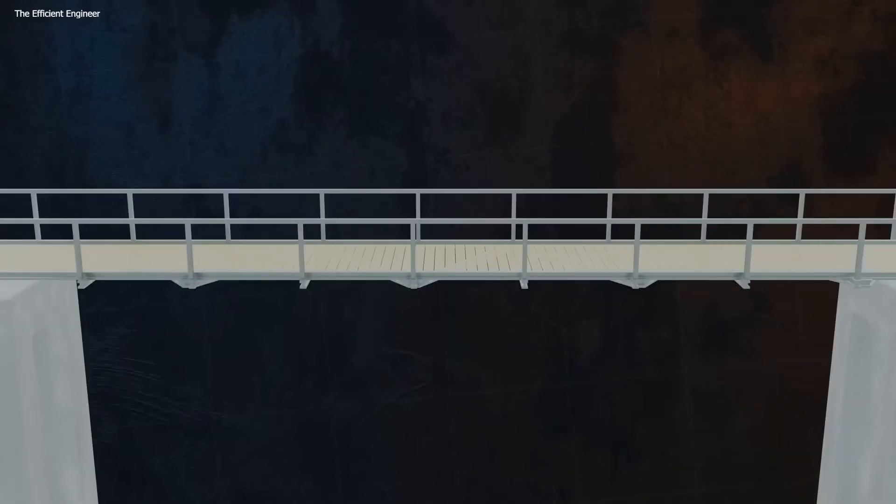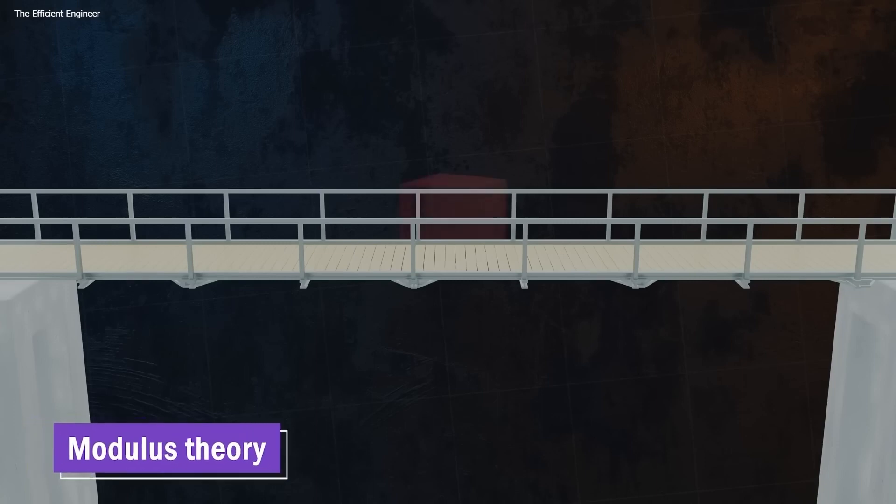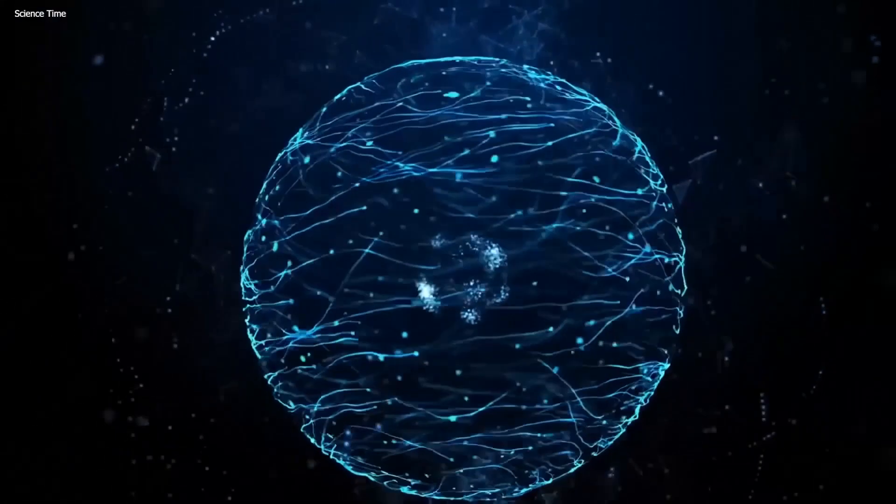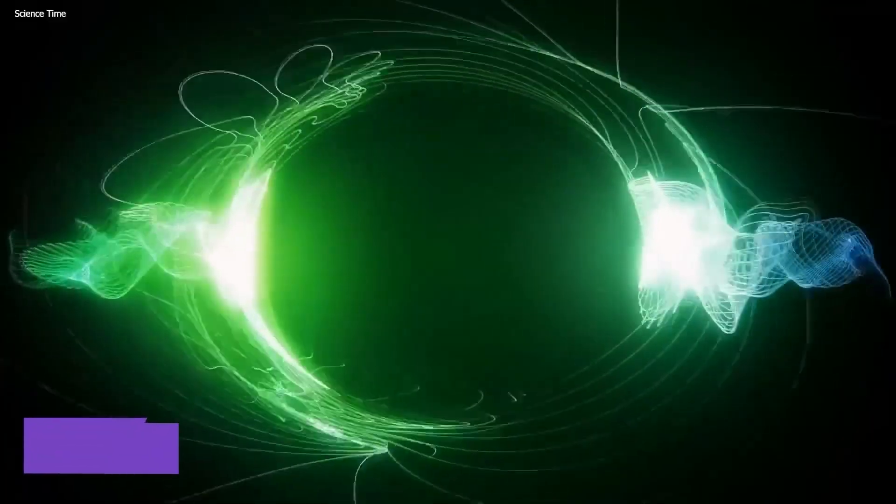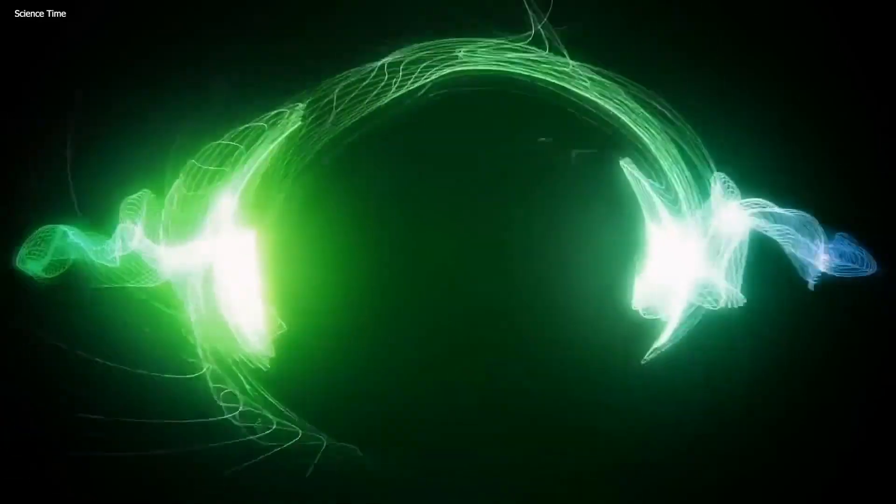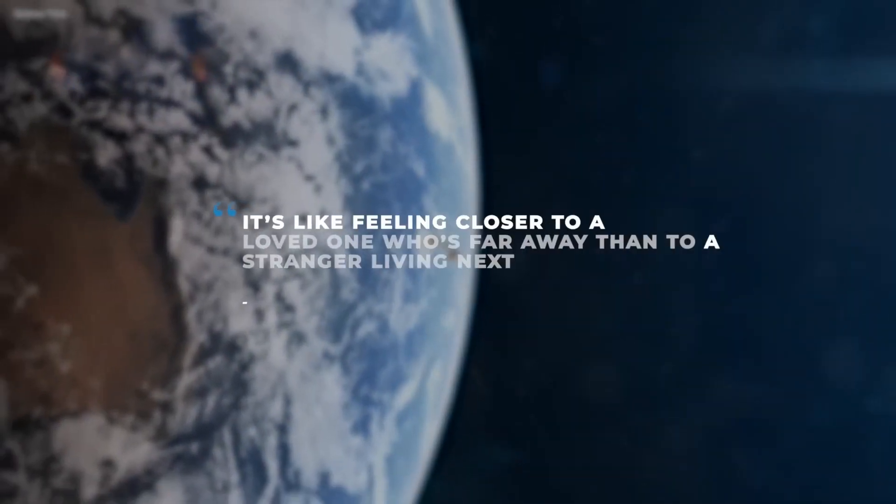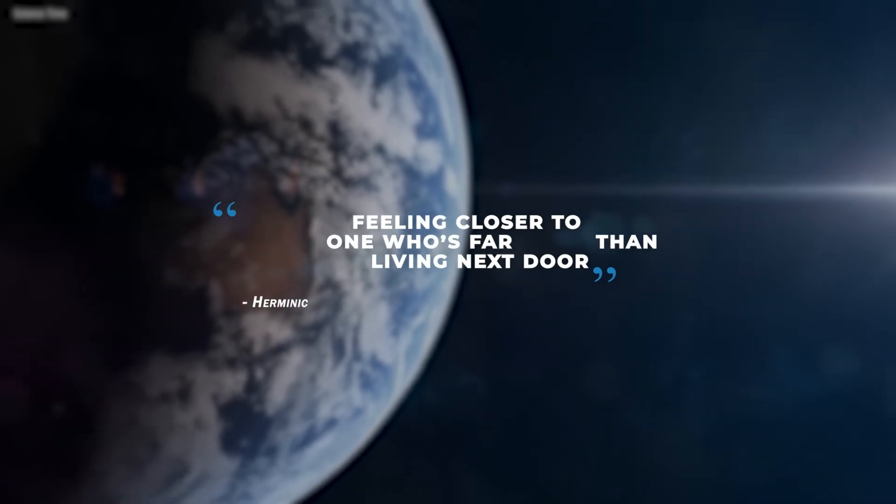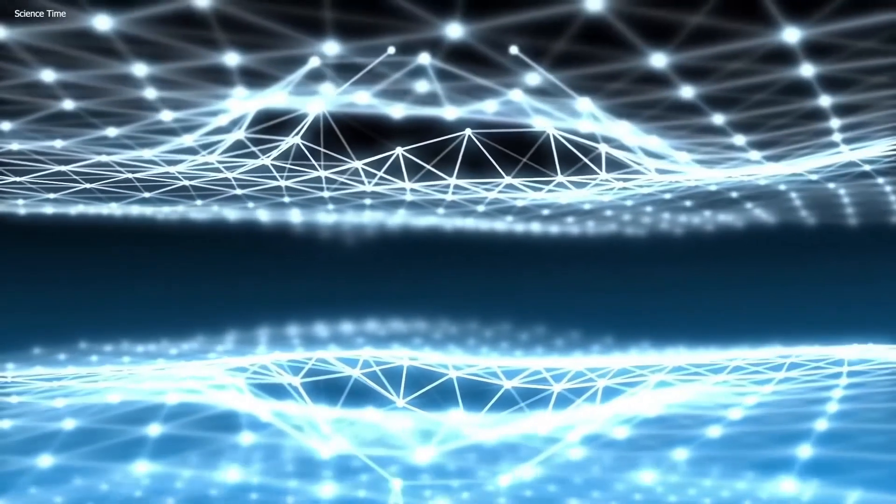But if we look at space-time through the lens of this modulus theory, things fall into place. If space-time is born from the quantum world, then closeness in a quantum sense takes precedence over physical proximity. As Herminick put it, it's like feeling closer to a loved one who's far away than to a stranger living next door. In the quantum world, these non-local connections are totally plausible.